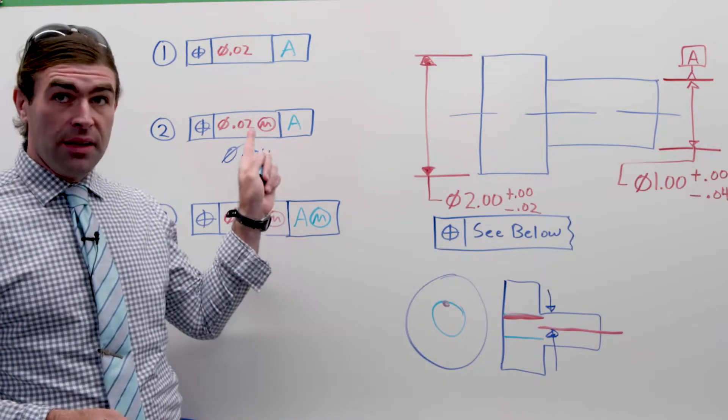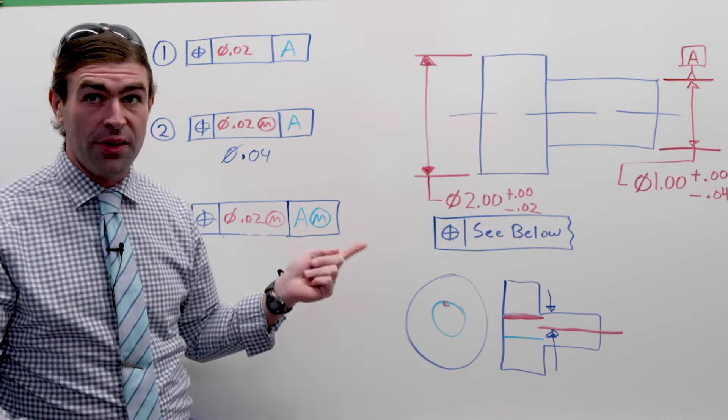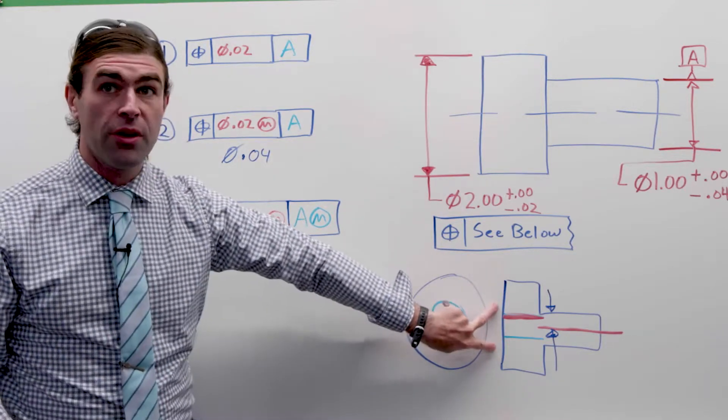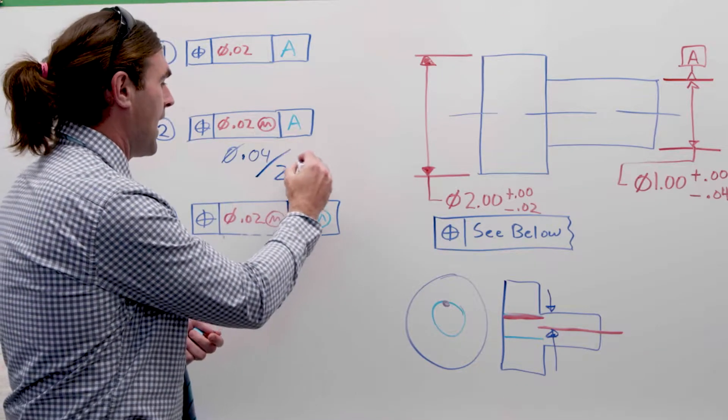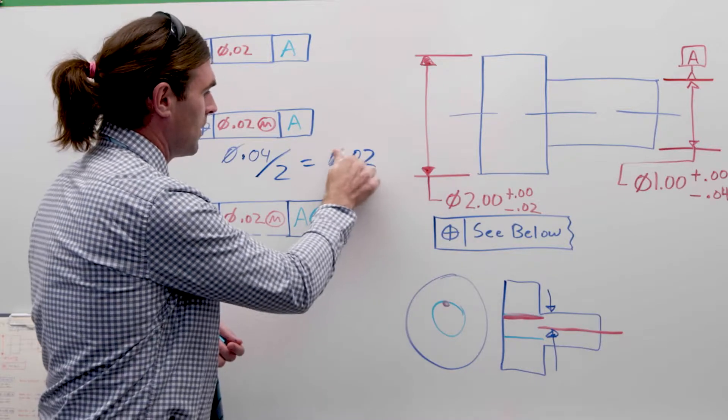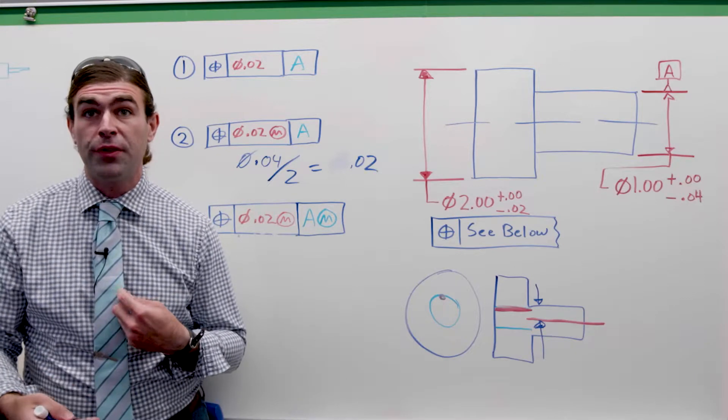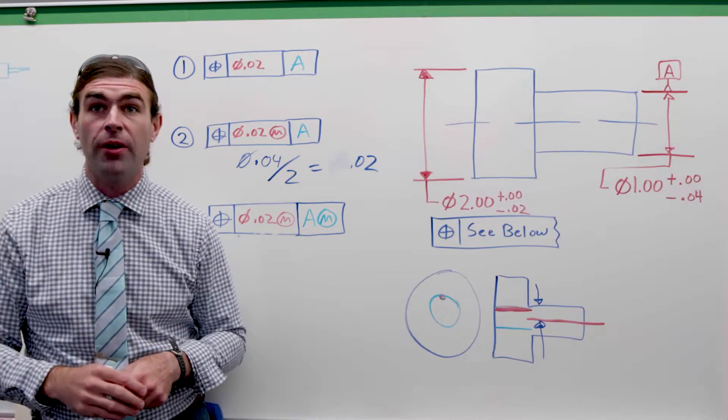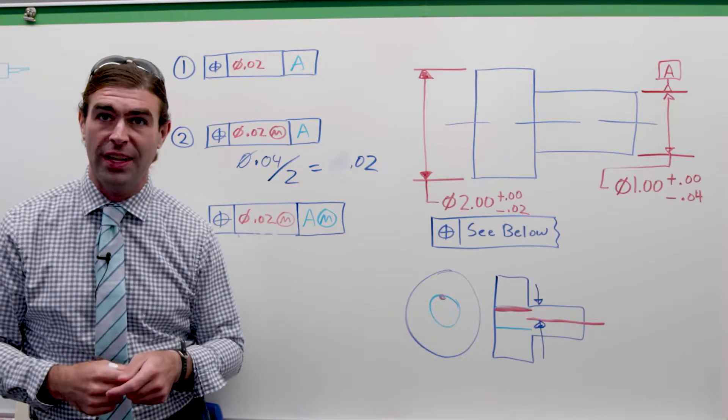Again, the datum feature is at RFS, so it's not going to move around on us at all. So we just have a larger version of this. Same idea, we're just going to cut this in half. So the axis of these two features can be 20 thousandths apart at MMC, if the position is at MMC.